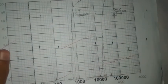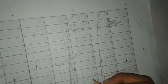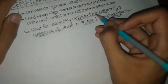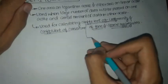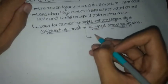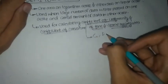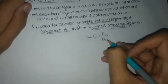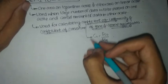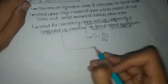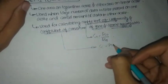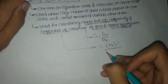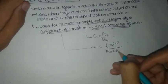To calculate the coefficient of uniformity and coefficient of curvature, we use the following formulas: Cu equals D60 divided by D10, and Cc equals D30 squared divided by D10 multiplied by D60.